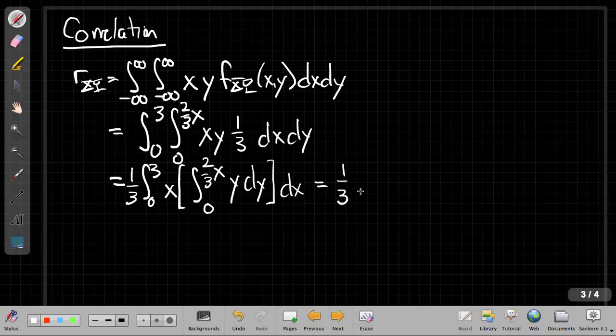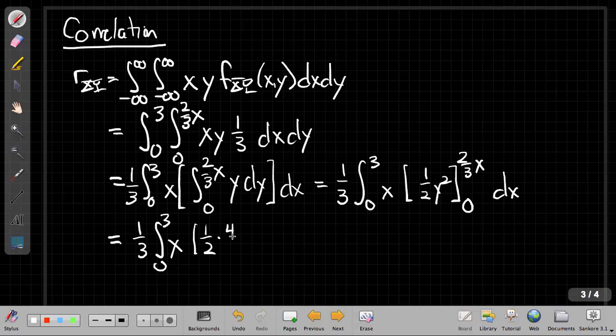This is one-third times the integral from 0 to 3 of X. And now if I integrate Y dy, I get one-half Y squared. I've got that from 0 to 2/3 X. And then all this dx. So at the upper limit, let me fill in the parts I'm still carrying along. So I have 1/3 integral 0 to 3 of X. At the upper limit, I get one-half times 2/3 of X squared is 4/9 X squared minus the lower limit. But when I put in zero for Y, I get zero dx.